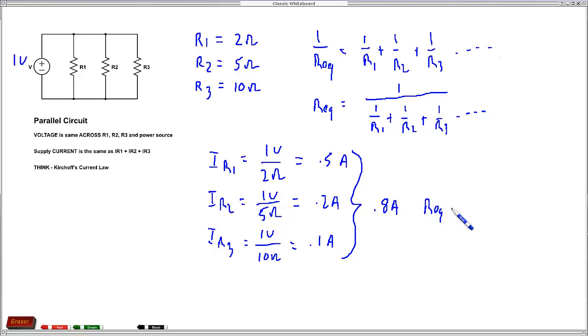We've got to take voltage divided by the current, the total current that we found. In this particular case, that's 1 volt over 0.8 amps and that turns out to be 1.25 ohms, which is our answer.